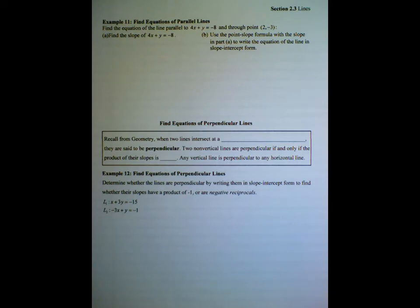Our last topic in section 2.3 on lines has been equations for parallel and perpendicular lines. We've looked at example 10 where we determined if two lines were parallel given the equation, not a graph, just given the equations for two lines. How do we know if they're parallel? We said the slopes have to be the same, the y-intercepts have to be different. So just put them in slope-intercept form and make those comparisons.